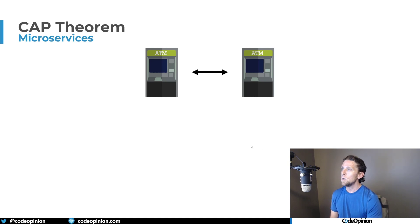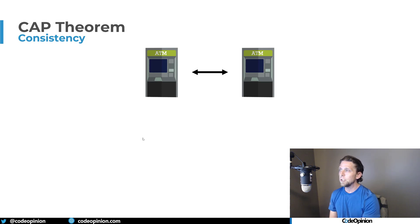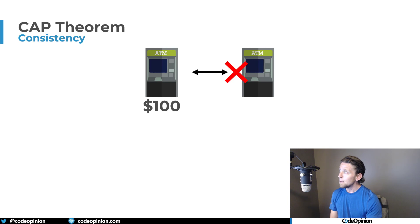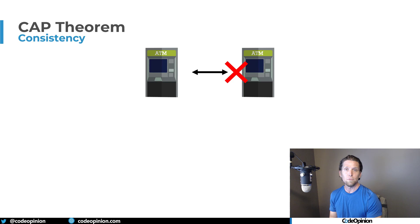Let's say we have two ATMs and they communicate over the network. If you go and try to deposit $100 at one ATM, it's going to communicate over the network to the other ATM to keep both ATMs in sync about your account and balance. When we have a network partition — losing communication between the two nodes — if we're choosing consistency, we tell the user sorry, we're not going to deposit that $100, because we need all nodes available and to have that same consistent value.